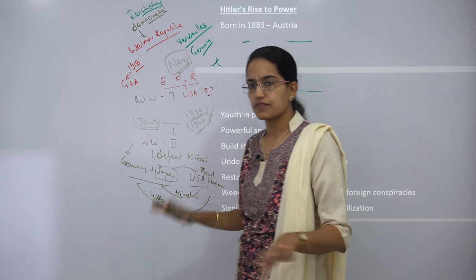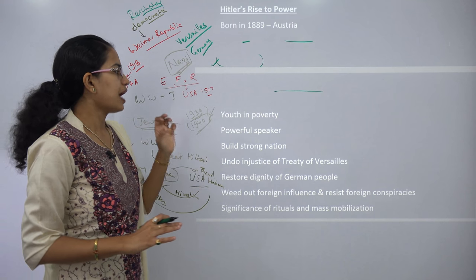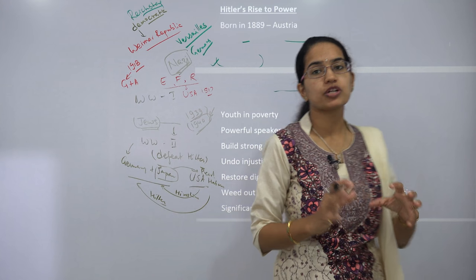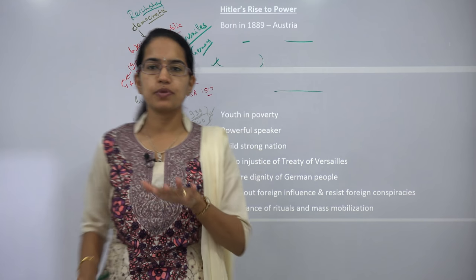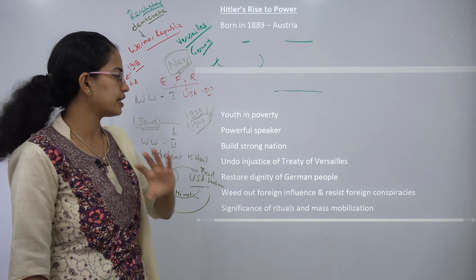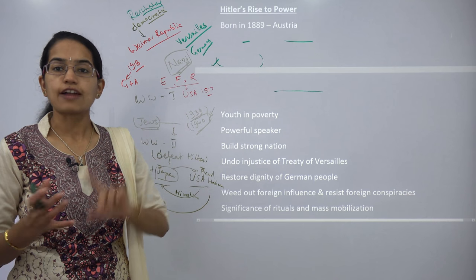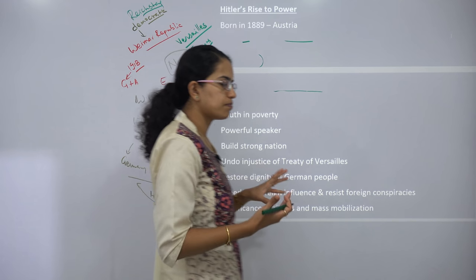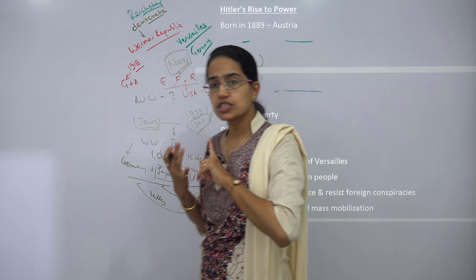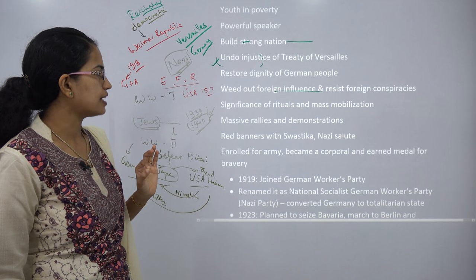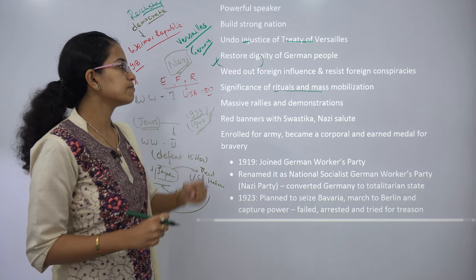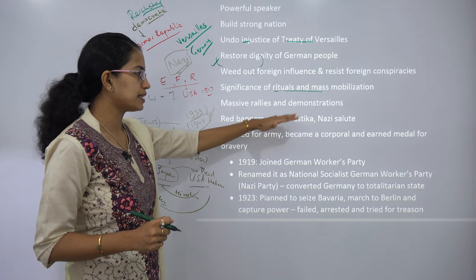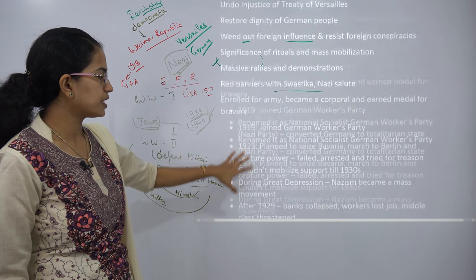Hitler was born in Austria, not even in Germany, in 1889, to a very poor family and spent most of his youth in poverty. He was a very powerful speaker and was looking to build a strong nation and remove anyone against the system. He spoke against the injustice done to Germany by the Treaty of Versailles and wanted the people of Germany to restore their dignity. He talked about mass mobilization, creating massive rallies, the Nazi salute, and red banners with the swastika as their symbol.